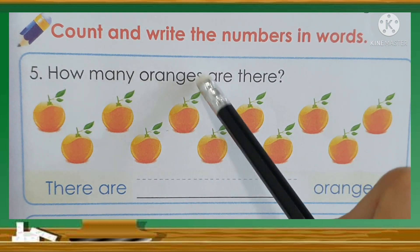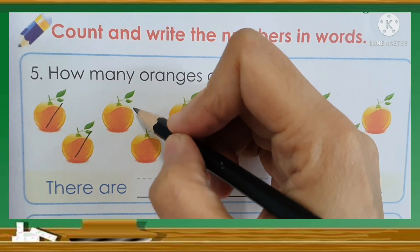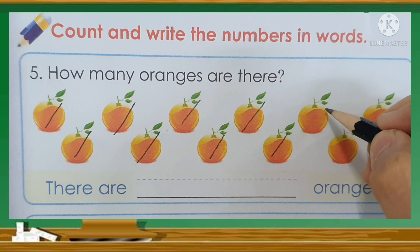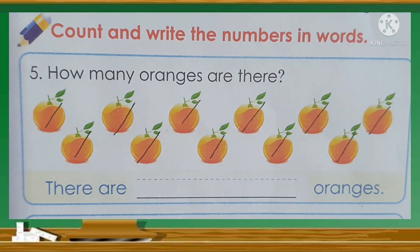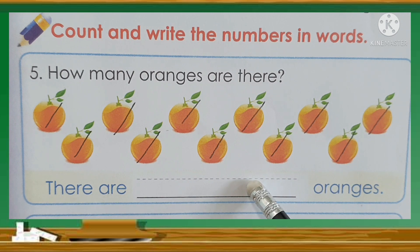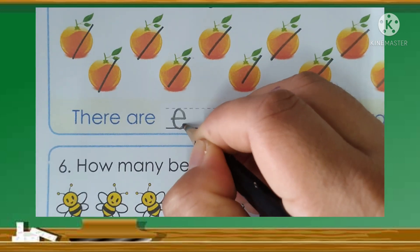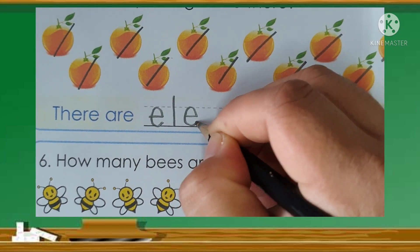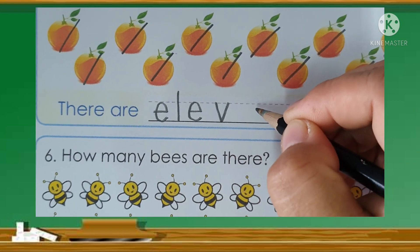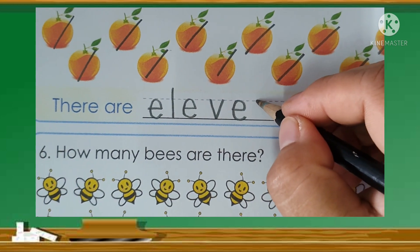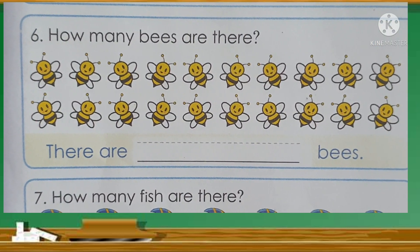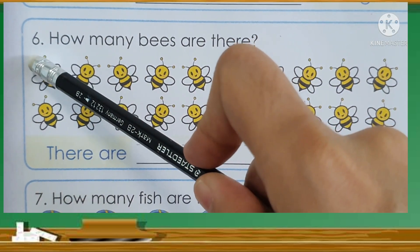Number 5: How many oranges are there? Now let's count. 1, 2, 3, 4, 5, 6, 7, 8, 9, 10, 11. There are 11 oranges. Now let's write the word 11: E-L-E-V-E-N. There are 11 oranges.